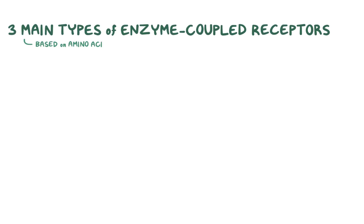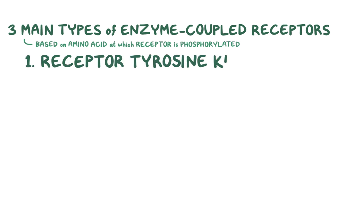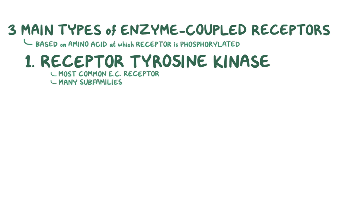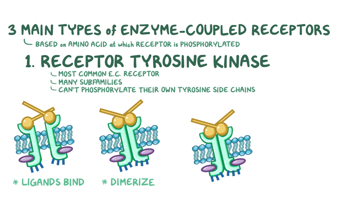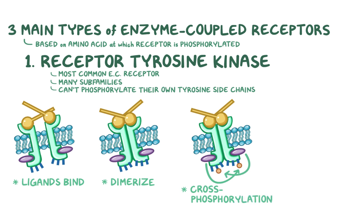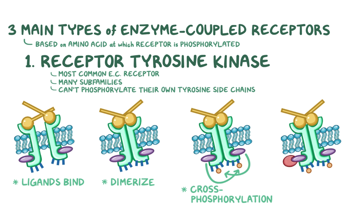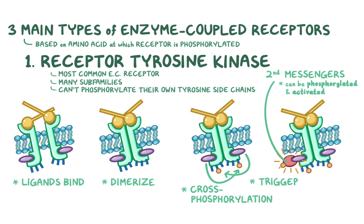There are three main types of enzyme-coupled receptors based on the amino acid at which phosphorylation occurs. The first and most common group are the receptor tyrosine kinases, of which there are many subfamilies. These molecules generally can't phosphorylate their own tyrosine side chains alone; when a ligand binds, two receptor chains come together and dimerize, cross-phosphorylating one another at multiple tyrosine residues. This triggers a conformational change creating high-affinity binding sites for second messengers, which can also be phosphorylated and activated, triggering the signaling pathway.